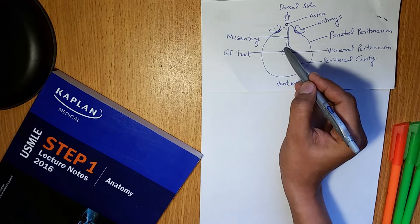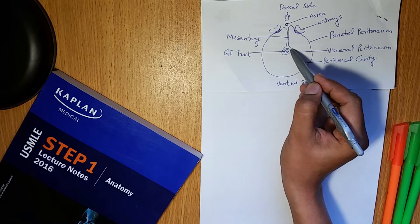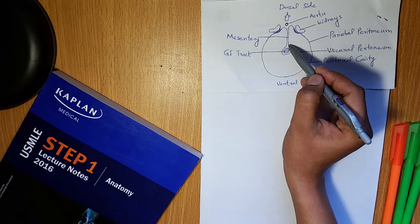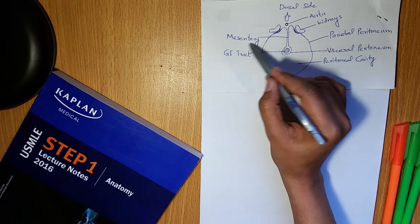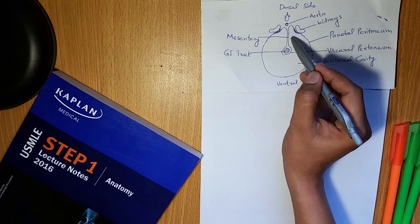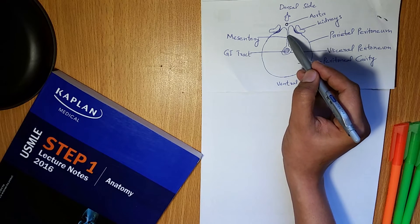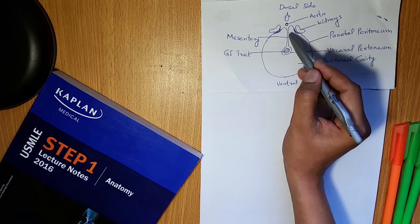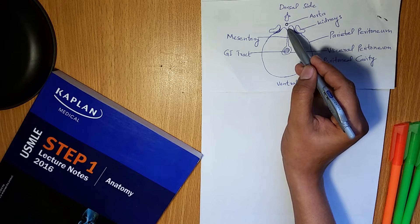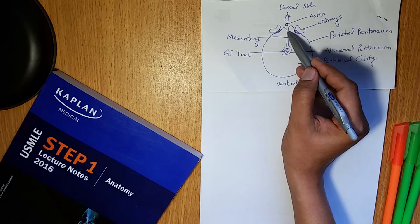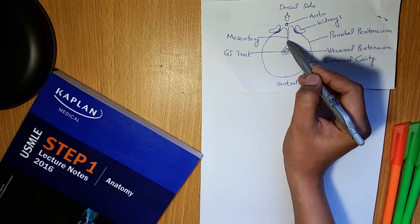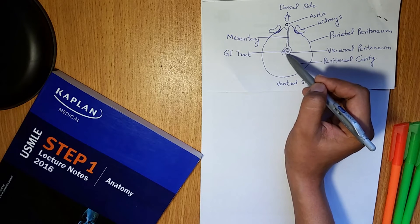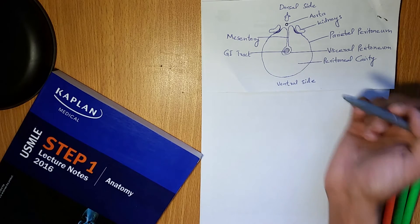The visceral layer forms a double layer of peritoneum called the mesentery. The mesentery allows for the passage of blood vessels, nerves, and lymphatics to reach the GI tract.